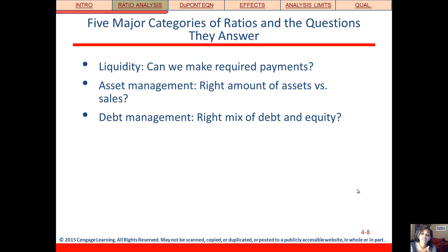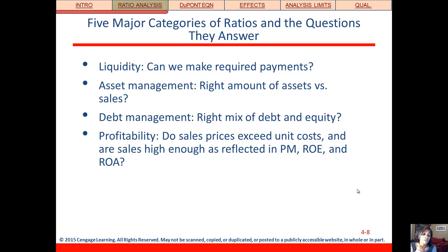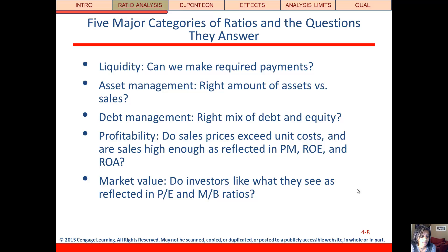At the same time, you don't want them to have too little where they're missing out on sales. Third category is debt management — how much debt do they have relative to equity, is it too much or not enough? Fourth is profitability — are they making money? Are their sales greater than their costs? Revenues minus expenses equal net income. With profitability, we have a number of ratios to help us see if they're profitable, how profitable they are, and what areas drive that profitability. The fifth category is market value — looking at the investing public to figure out what they think about the company based on what investors are doing with the stock price.